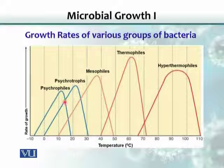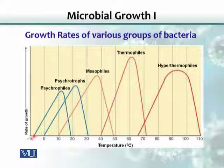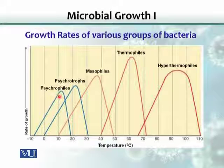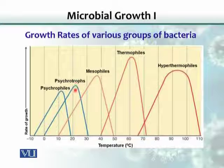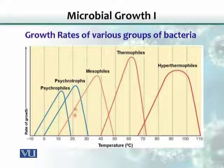As temperature increases beyond the optimum, growth decreases. There is a minimum, a maximum, and a best growth temperature — called the optimum. There is also another subdivision within psychrophiles called psychrotrophs. Although psychrotrophs can grow at low temperatures, their growth is best between 20 to 30 degrees Celsius.